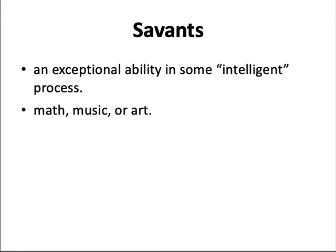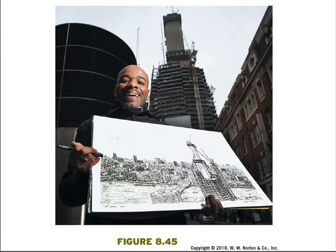Savants have minimal intellectual capacities in most domains, but at a very early age each savant shows an exceptional ability in some intelligent process — related to math, music, or art. The combination of prodigious memory and the inability to learn basic tasks is a great mystery. An example is Stephen Wiltshire, who, despite having autism spectrum disorder, published a book of remarkably accurate memory-based drawings by the time he was a young teenager. In October 2010, he held his drawing of an architectural site in London after observing it briefly and completing the picture largely from memory.